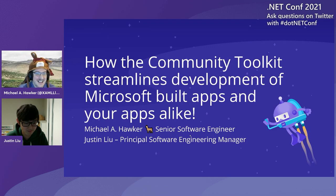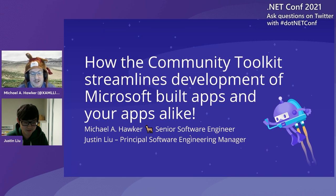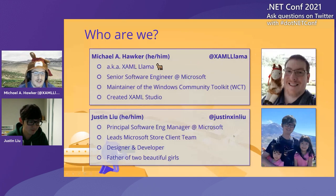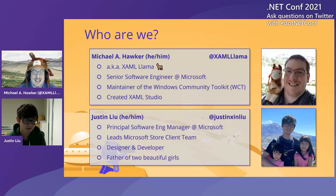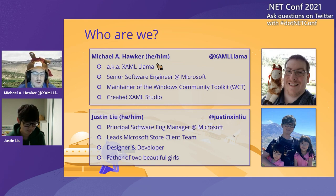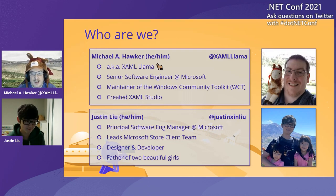So again, welcome. We're here to talk about how the community toolkit streamlines development of Microsoft built apps and your apps alike. My name is Michael A. Hawker, also known as the XAML llama - that's why I have the hat. I am a senior software engineer here at Microsoft and I maintain the Windows Community Toolkit, which is something we're going to be talking about a lot during this session. And I also created an app called XAML Studio, which helps you rapidly prototype ideas and try them out before you put them into your app.